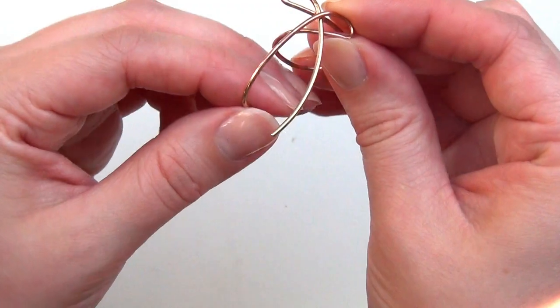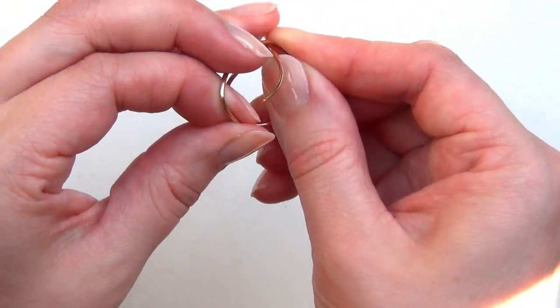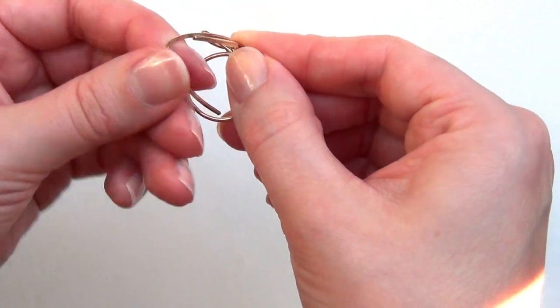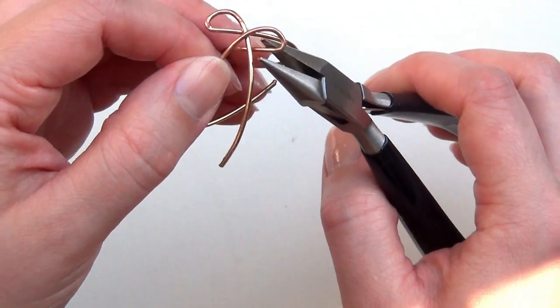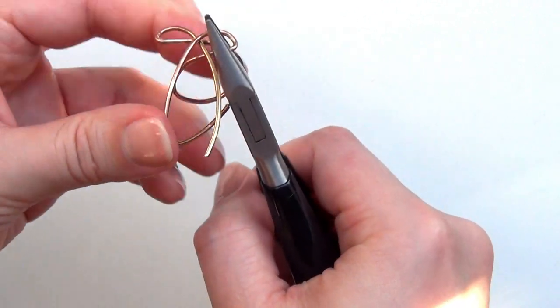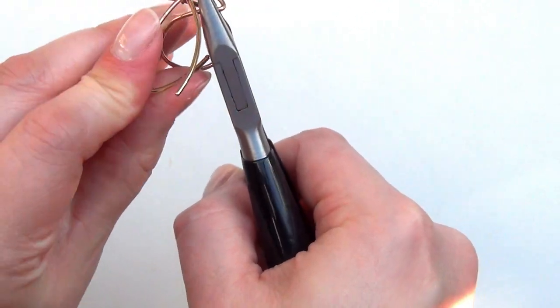Taking the end of the wire from the second loop that you made, bend it down a little bit so that you can feed it through the middle of your ring. Next, put the pliers back through that second loop that you made so that it keeps its shape, and feed that wire through the center of the ring.